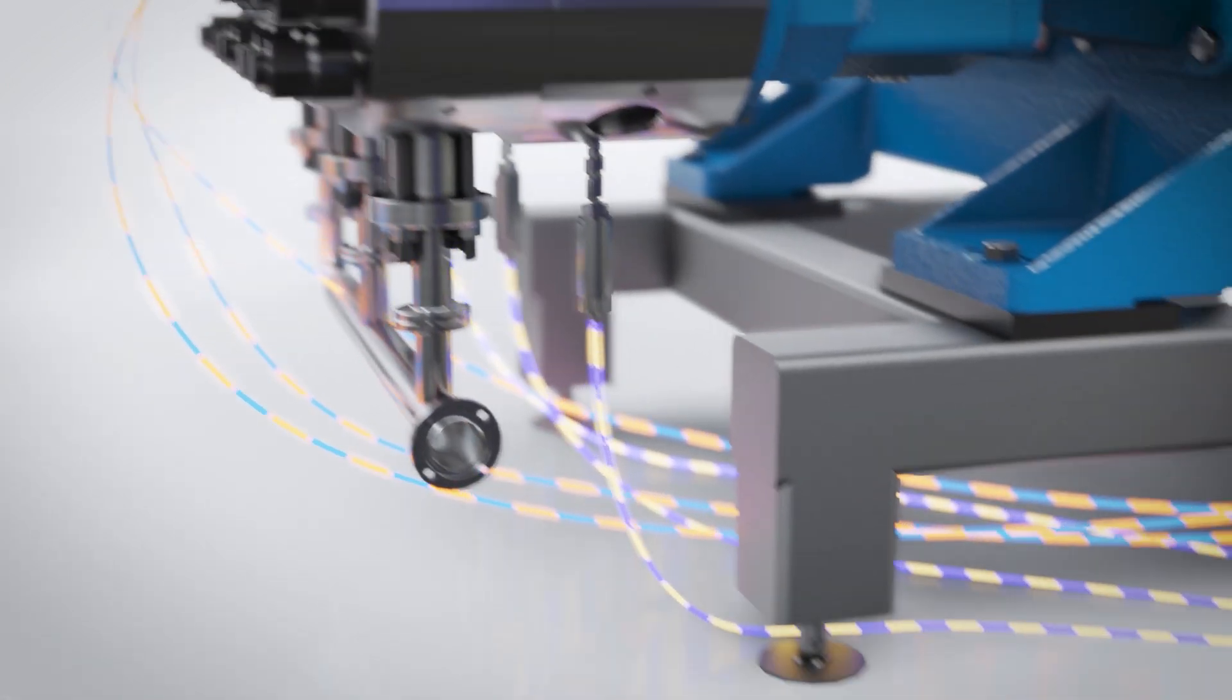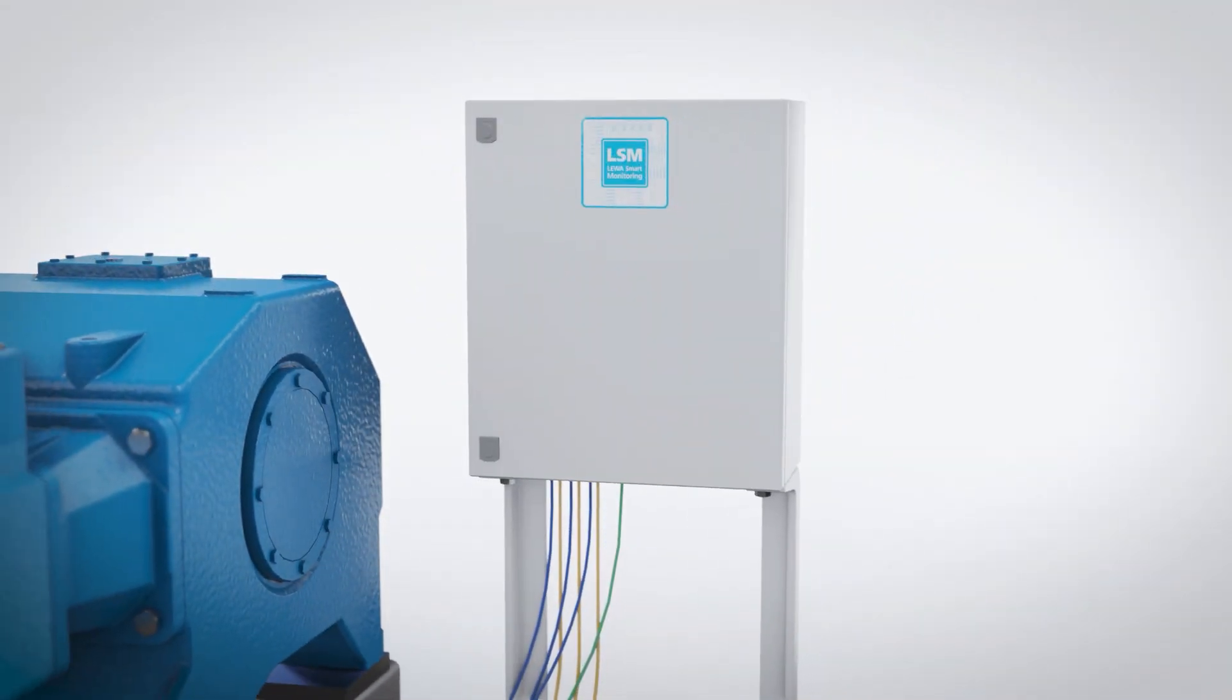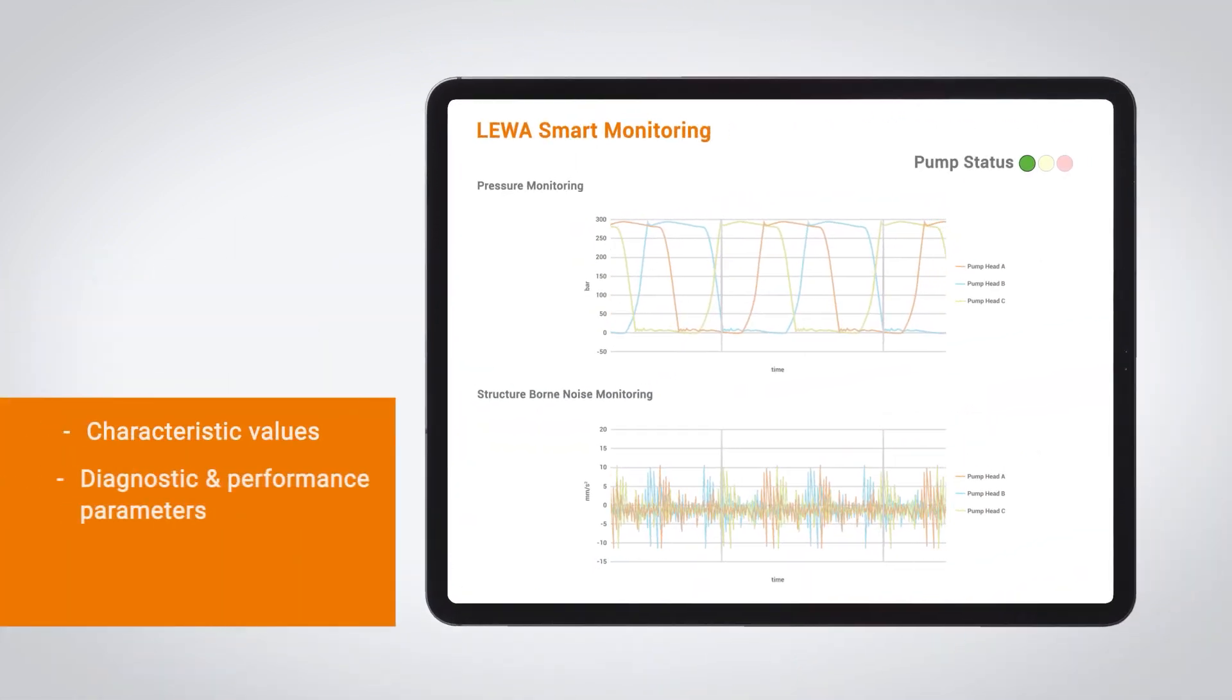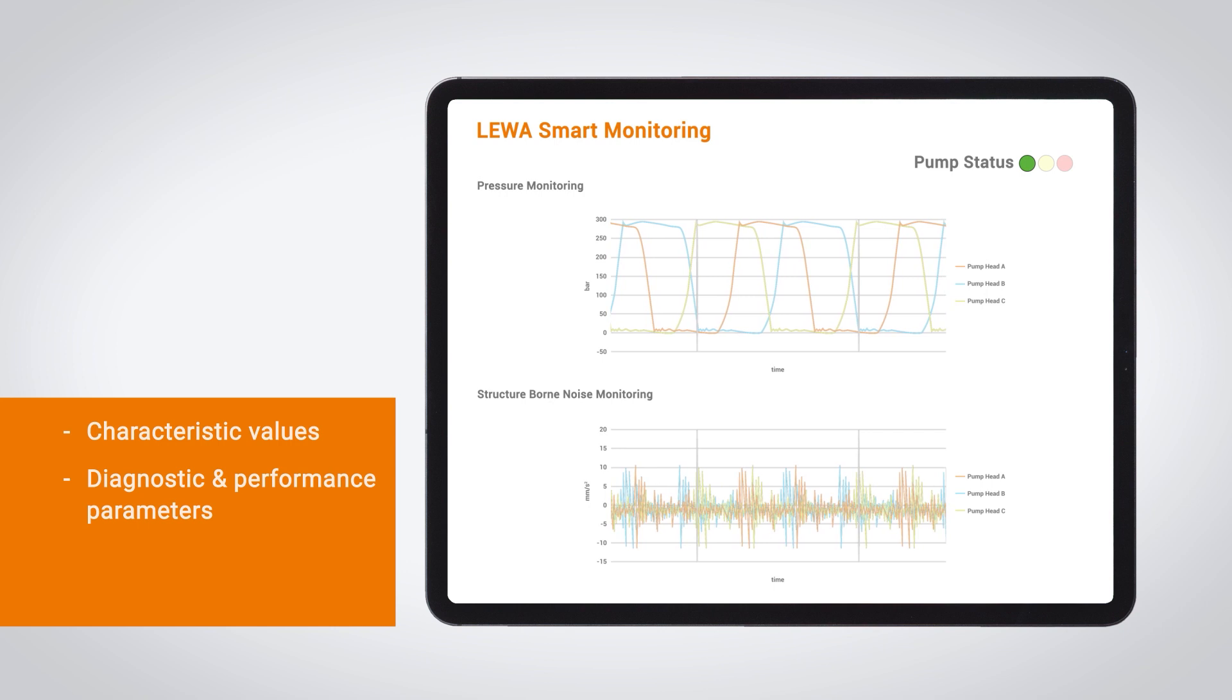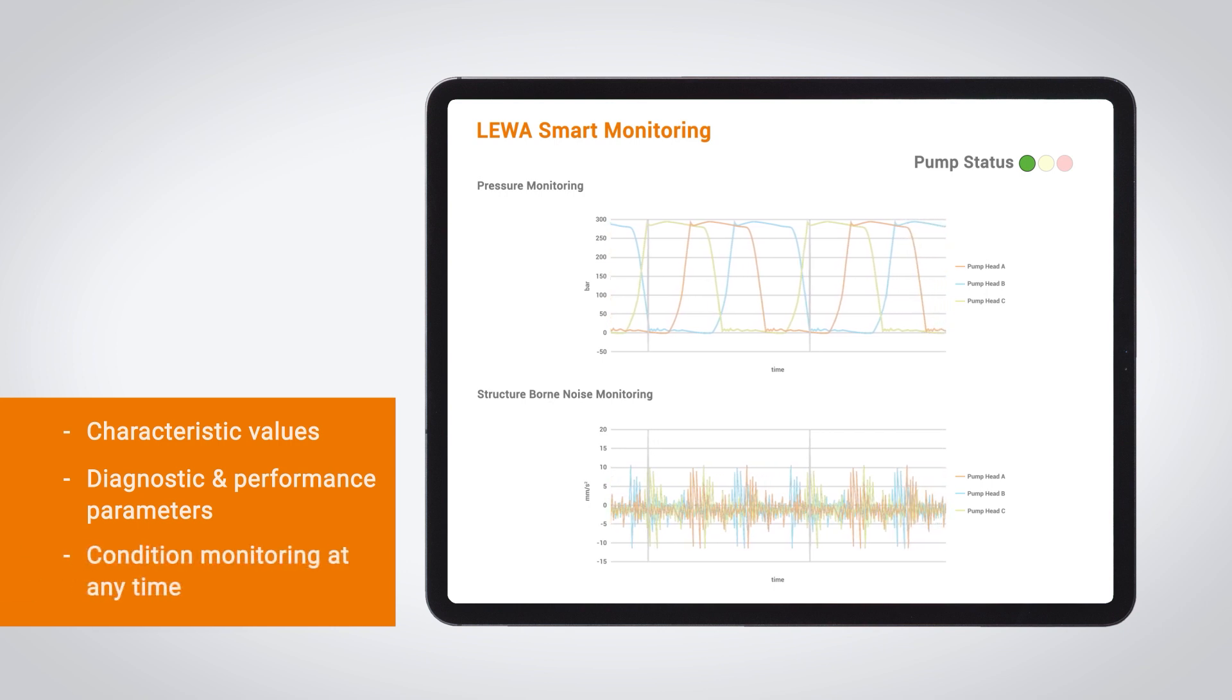In the control cabinet, the sensor data is recorded, further processed, and finally output. The results are characteristic values as well as diagnostic and performance parameters of the pump. This enables the condition monitoring of the pump and the connected pipe system at any time.